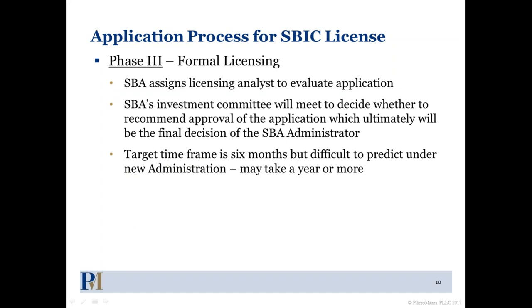After filing, we go into phase three — the formal licensing. The SBA assigns a licensing analyst to evaluate the application, and the SBA's investment committee meets to decide whether to recommend approval. The final decision is that of the SBA administrator. The target time for the SBA once they receive the final application is six months, but we've been hearing that it's actually taking about 12 months or even over a year right now to process applications.